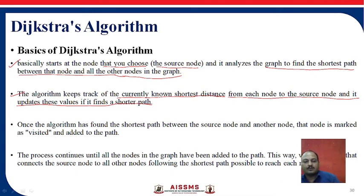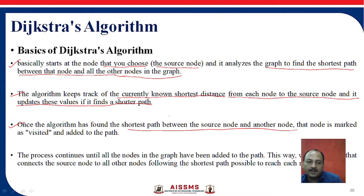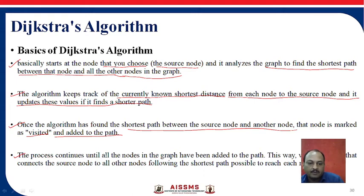The algorithm updates the value if it finds a shorter path. Initially, we consider all distances as infinity. Once the algorithm has found the shortest path between the source node and another node, that node is marked as visited — meaning we don't need to visit it again. The process continues until all nodes in the graph have been added to the path.